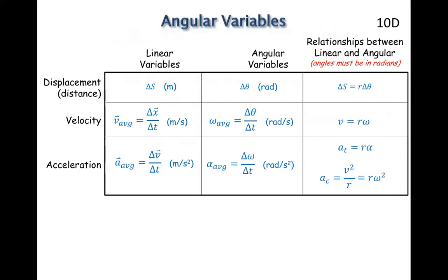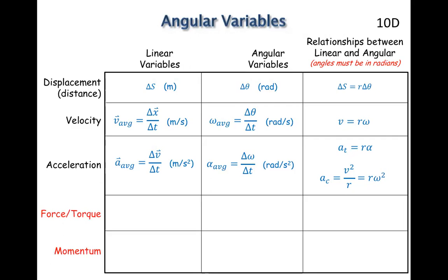Here's that chart we had, where we've got the linear compared to the angular, with the defined relationship between them, including that centripetal linear one that doesn't really have an angular version because it's assumed that it's all held together for that. We're now adding two more columns: forces, which become torques, and momentum. The force we've done before is now called a torque, and they're related by the radius perpendicular times the force — RF sine φ. Momentum in the linear case we know; it's Iω for angular variables.